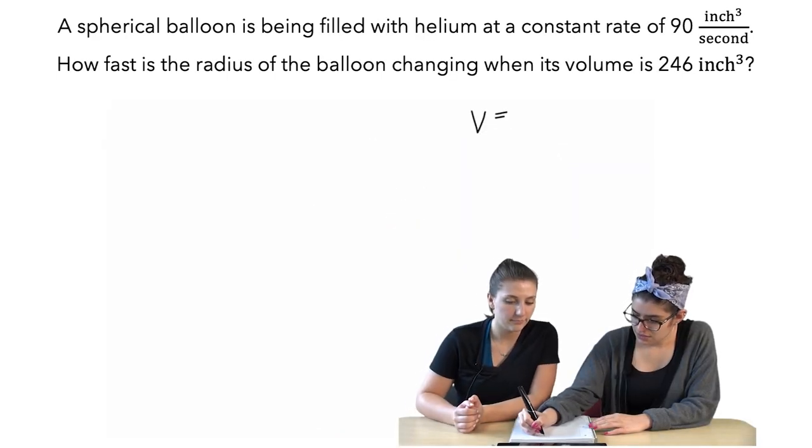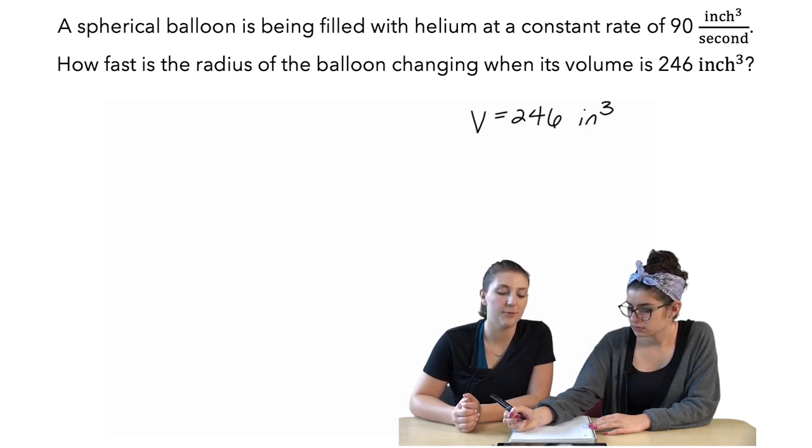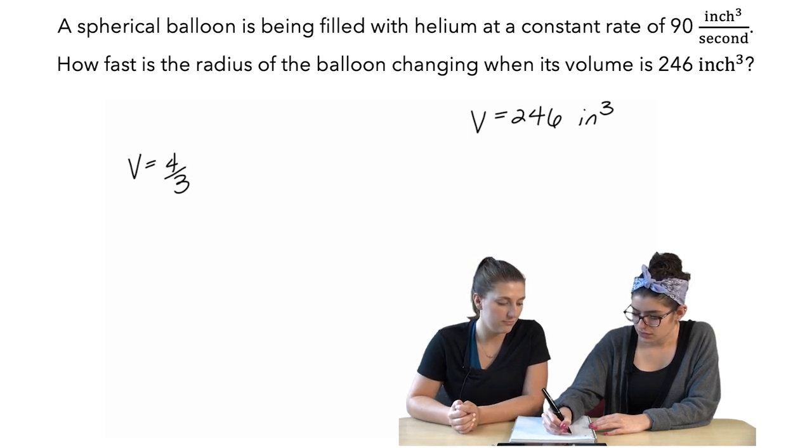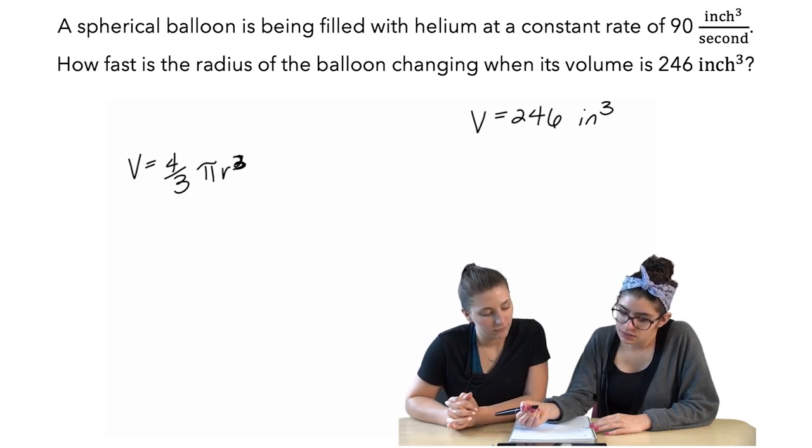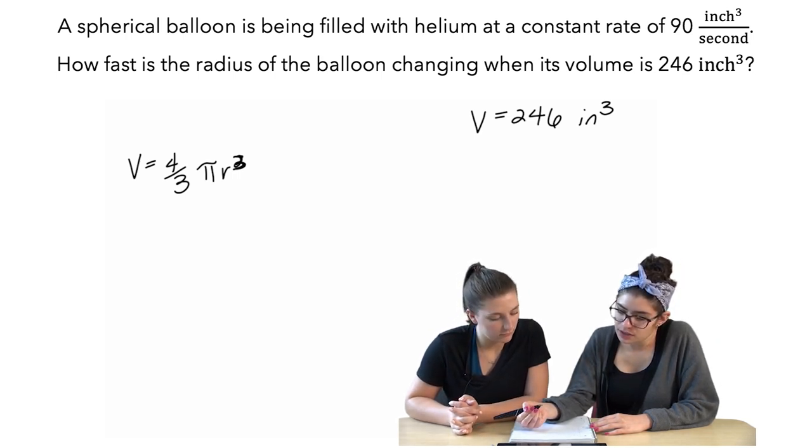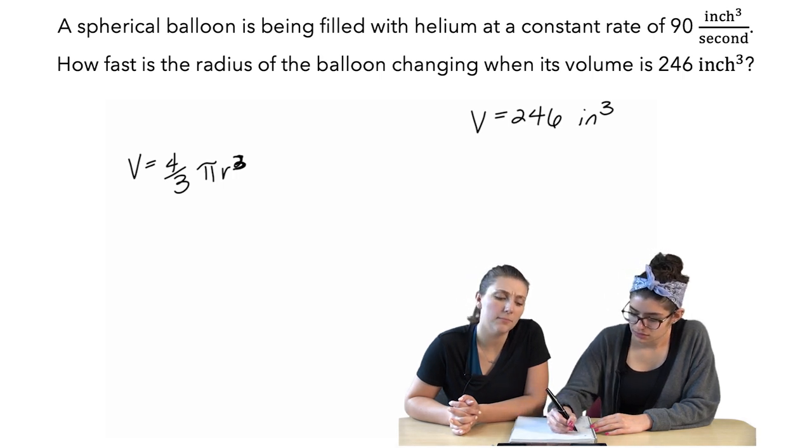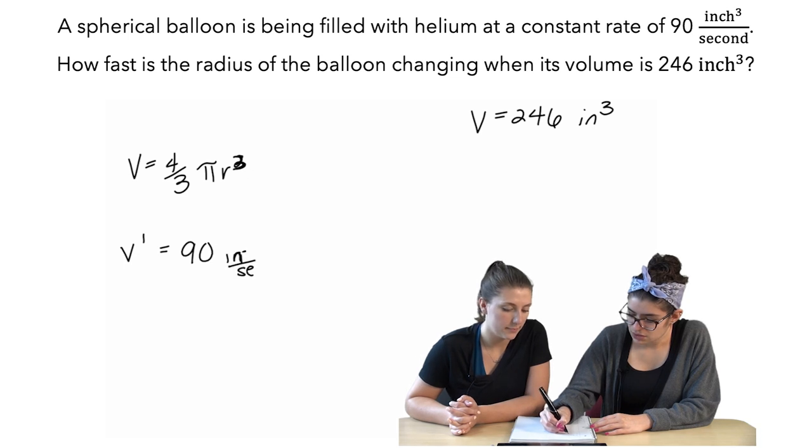So, volume is 246 inches cubed. And we know the formula for the volume of a sphere is volume equals 4 thirds pi r squared. A spherical balloon is being filled with helium at a constant rate of 90 cubic inches per second. So, what is that rate describing? V prime. V prime equals 90 inches cubed per second.